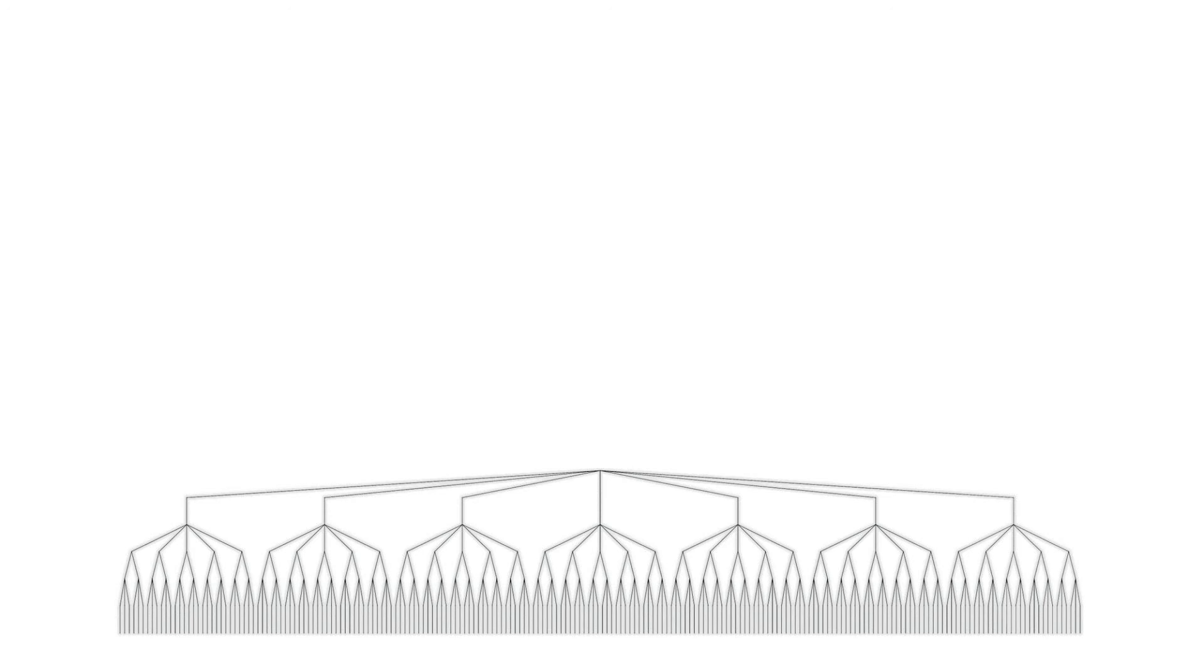At order 7 we have 7 sets of these 30-dimensional spacetimes. The complexity gradient is so shallow that to us the extra 7 dimensions appear identical, so we only experience 30 dimensions.